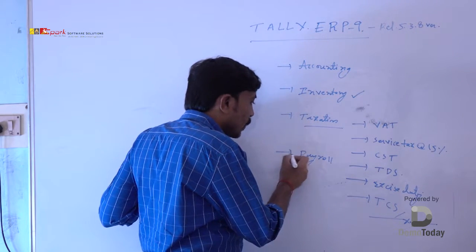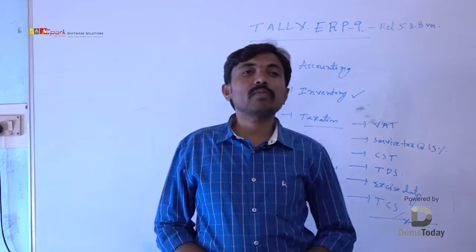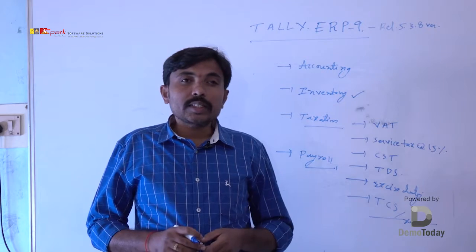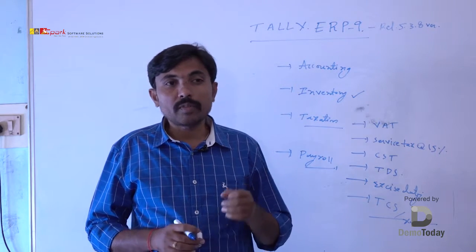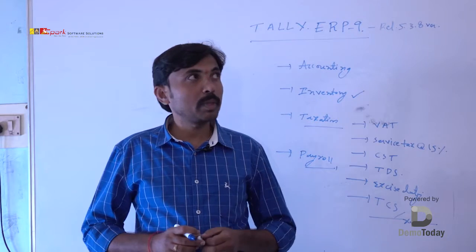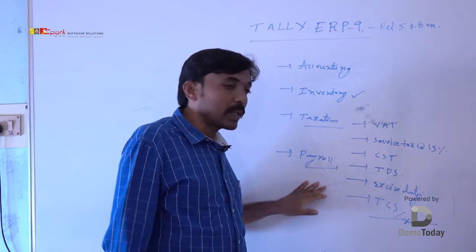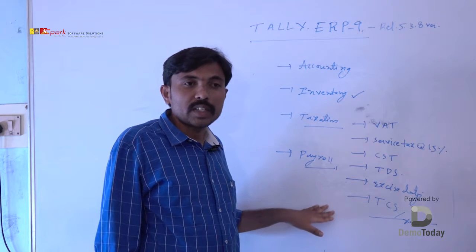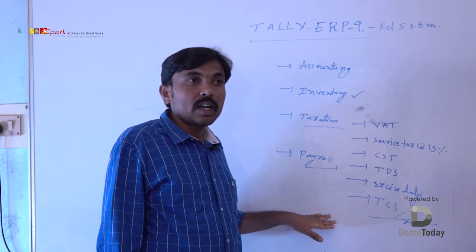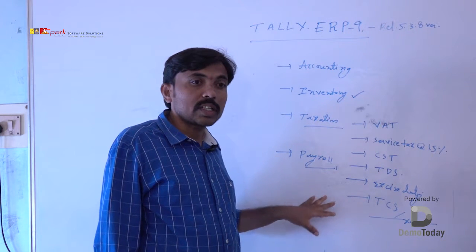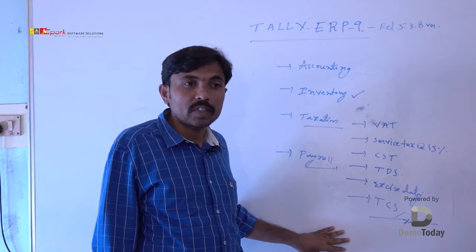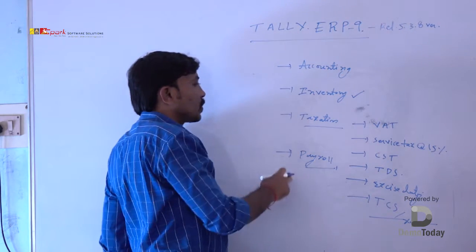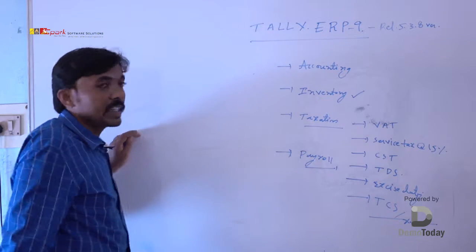Another module is payroll, used for preparation of monthly employee pay sheets and pay slips. In an organization with 100 or 1000 members, every month those people receive salaries. Training covers how to prepare salary statements — TA, DA, HRA calculations, PF deductions, ESI deductions — and ultimately how to calculate gross salary and net salary of the employee. These are all things covered in the payroll module. These four modules are covered in the Tally ERP9 course.